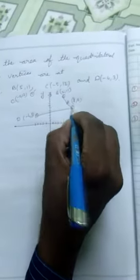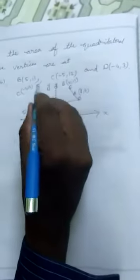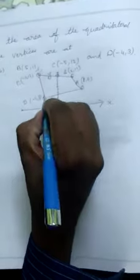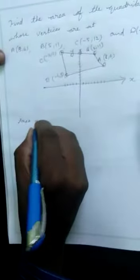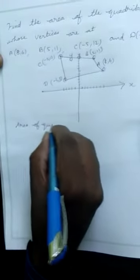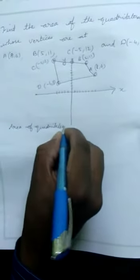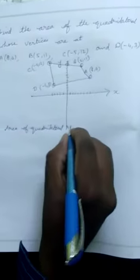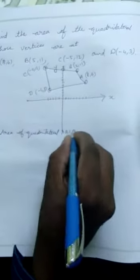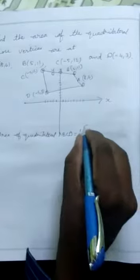Join these four points. This forms a quadrilateral. Now, the area of quadrilateral ABCD is equal to 1/2 — open parenthesis.